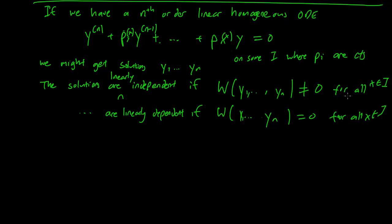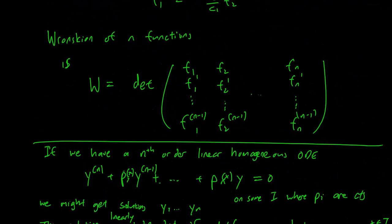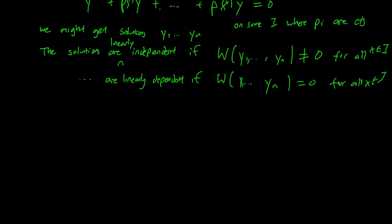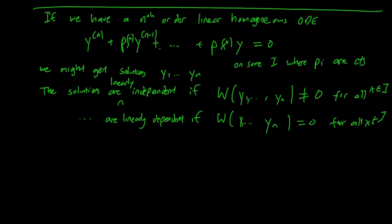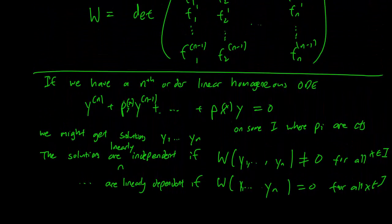So the point is that if you want to check whether your solutions are linearly independent or not, just run them through the Wronskian. Take the determinant of the matrix, and if it's zero it's linearly dependent, and if it's not zero it's linearly independent, much the same way as it was in the second order case.